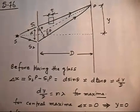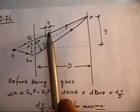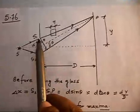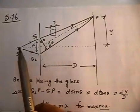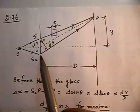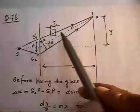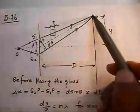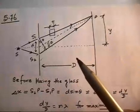The problem is asking: give me the condition for maxima if there is no glass sheet here. Assume there is nothing placed — this part comes later. There is a source which sends light through both slits, and these two slits act as secondary sources illuminated by the same source, so they are coherent. At any point P on the screen, light arrives from both S1 and S2. I'm interested in whether there will be a maximum or minimum at point P.